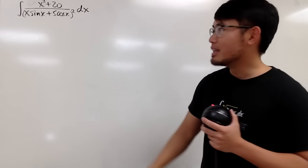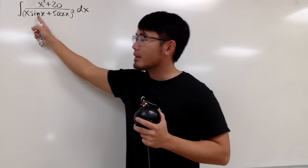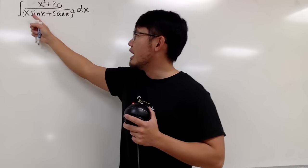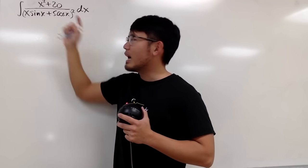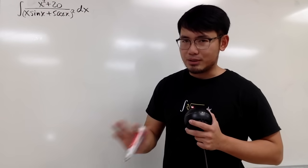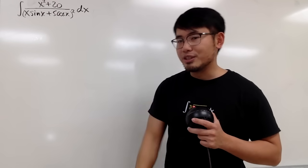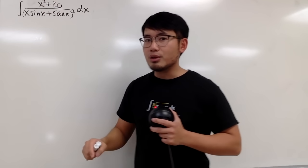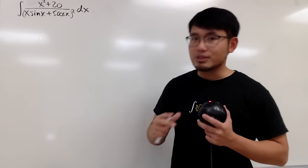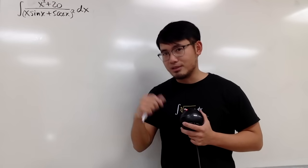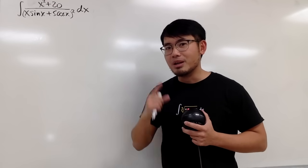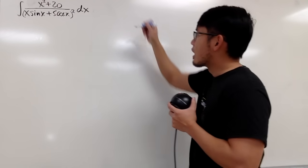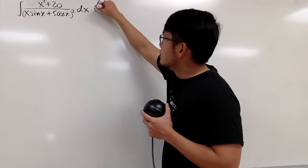Here's the deal — we have sine x and cosine x, and even though they have things in front of them, that's okay. The truth is we can actually write these two terms into just a cosine function with something in the front and some new things as well.